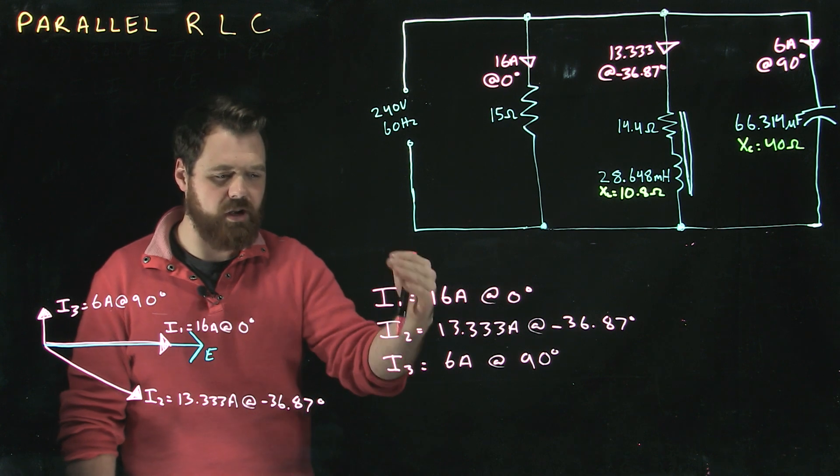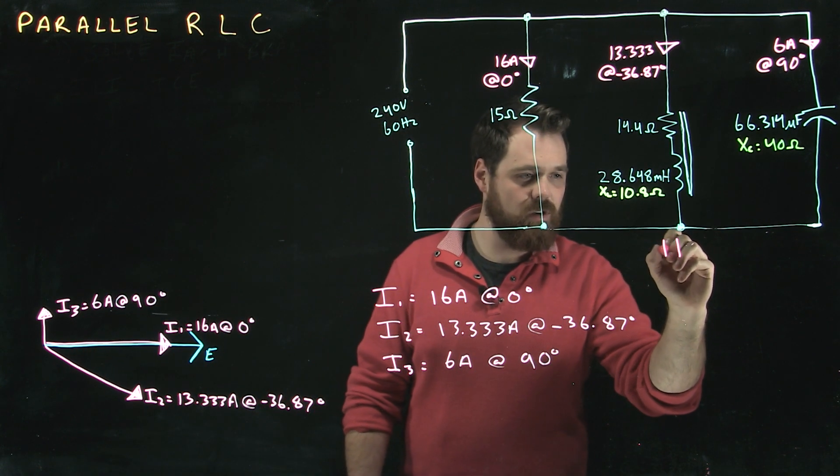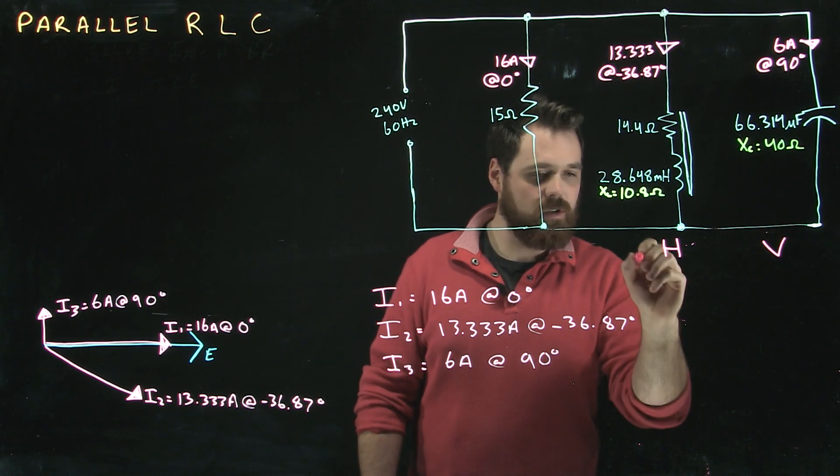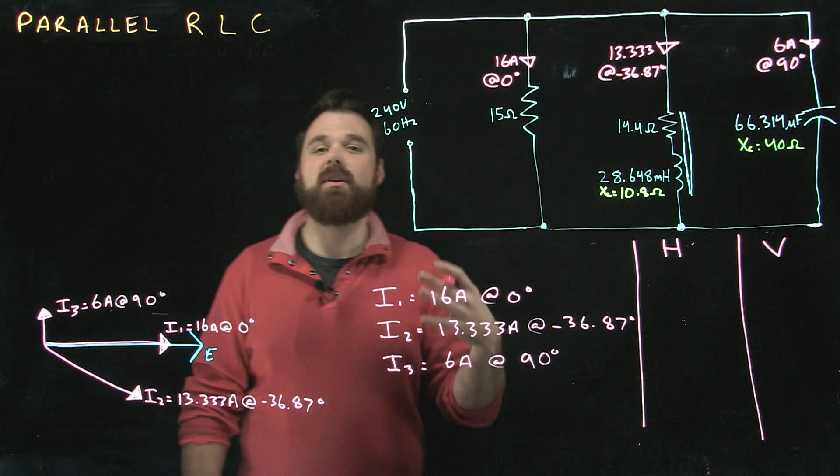So what we do is take these three values I1 plus I2 plus I3 and put them into an HV chart. We're going to add up all of our horizontals and all of our vertical values.